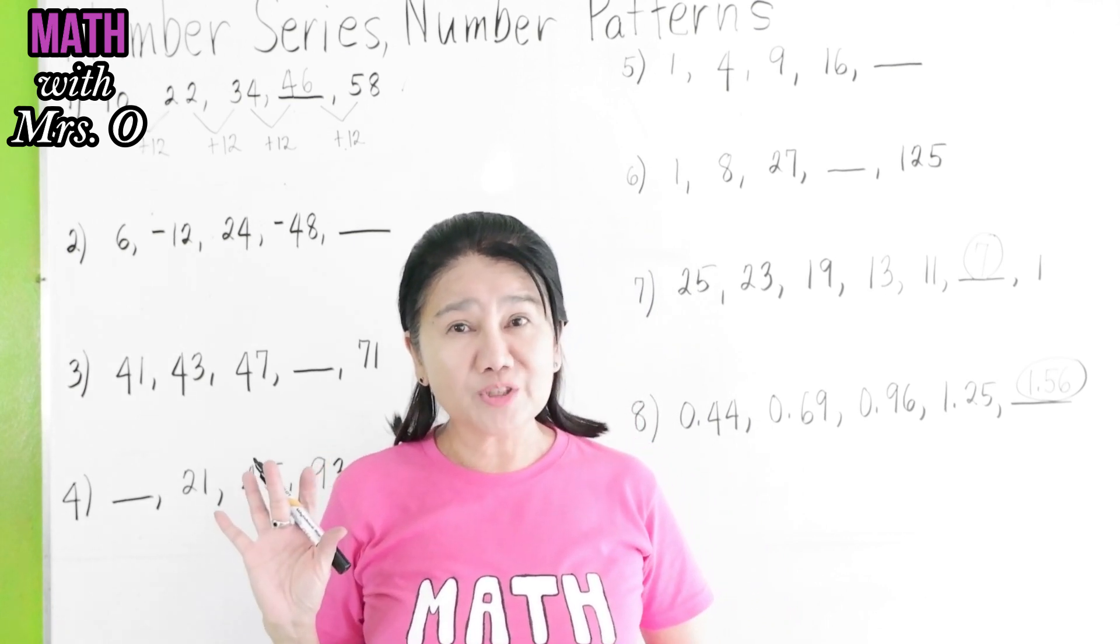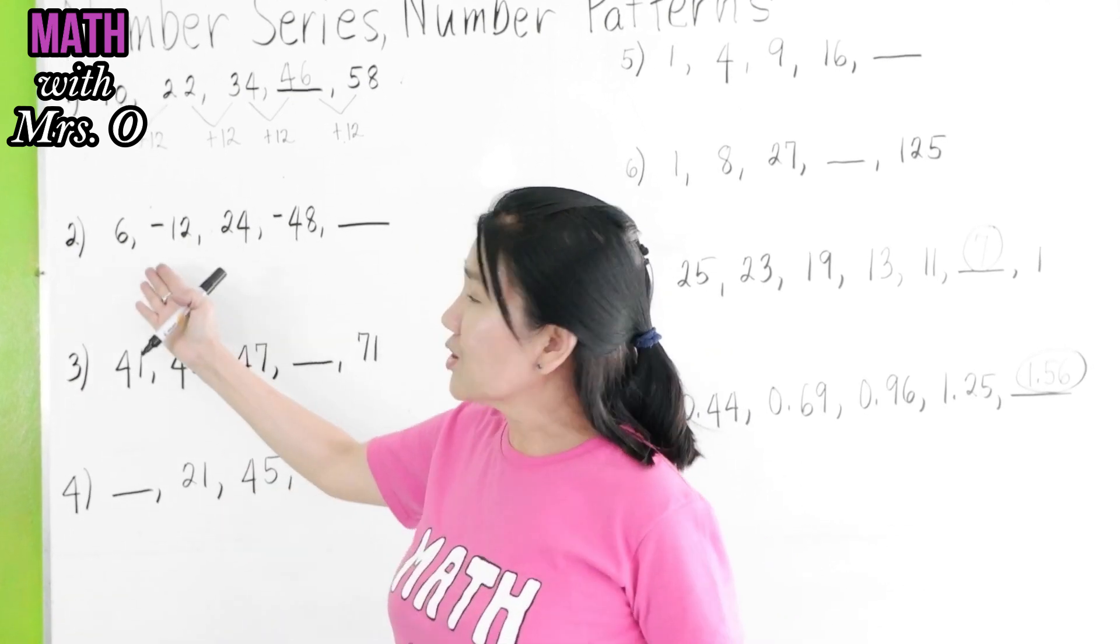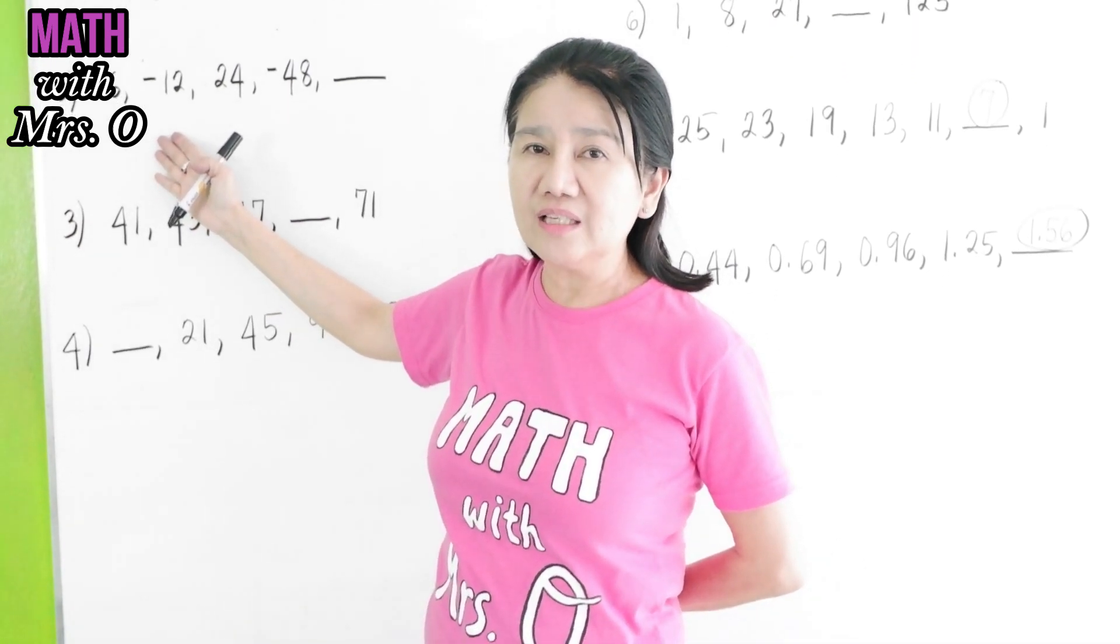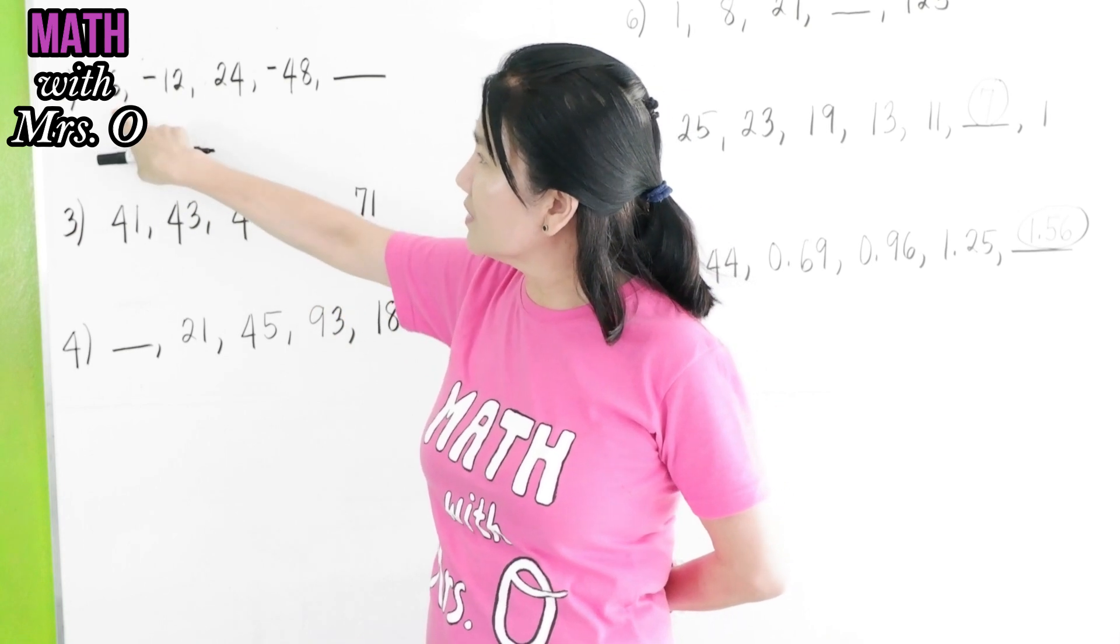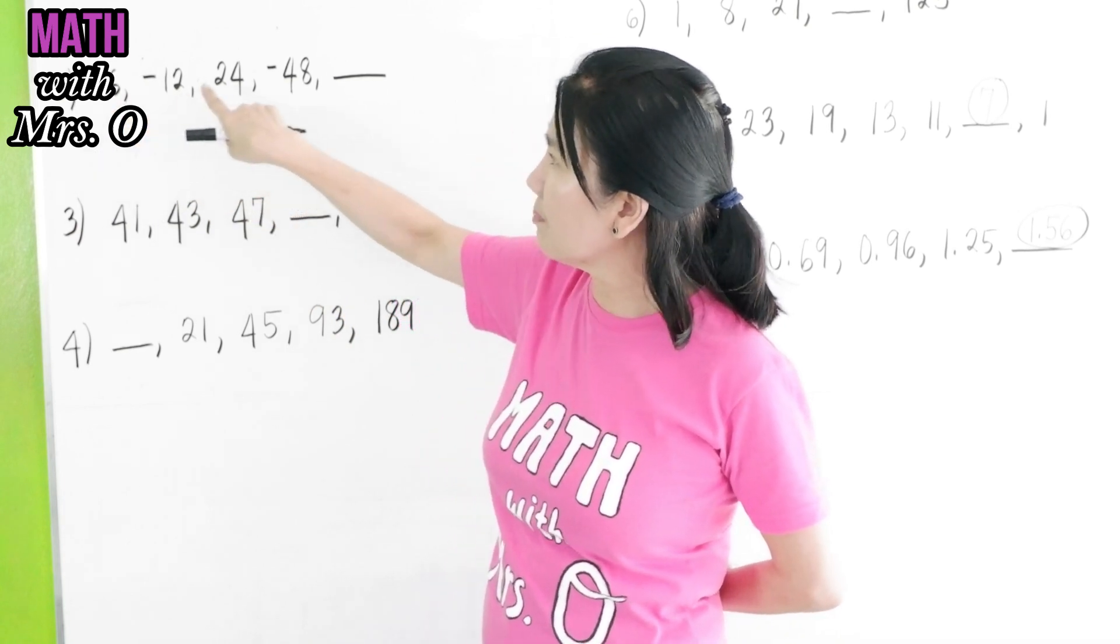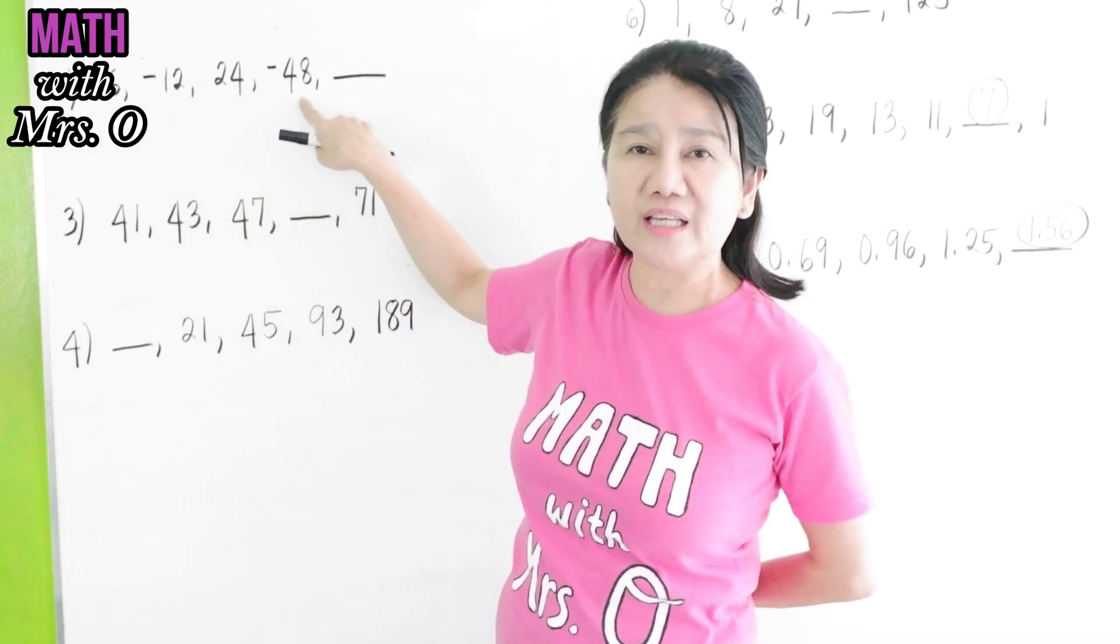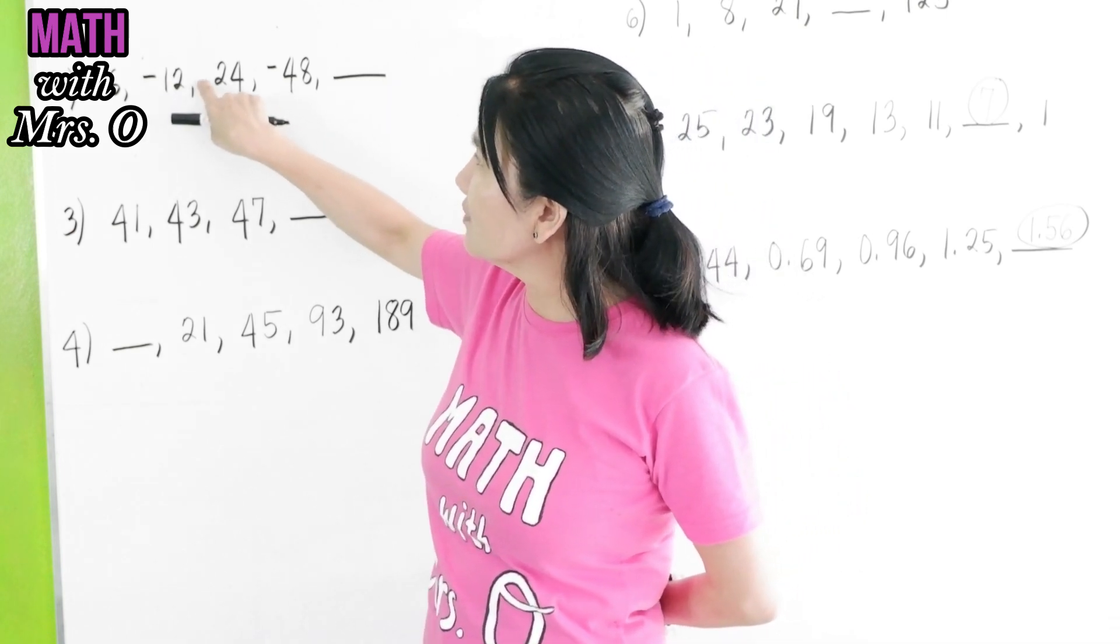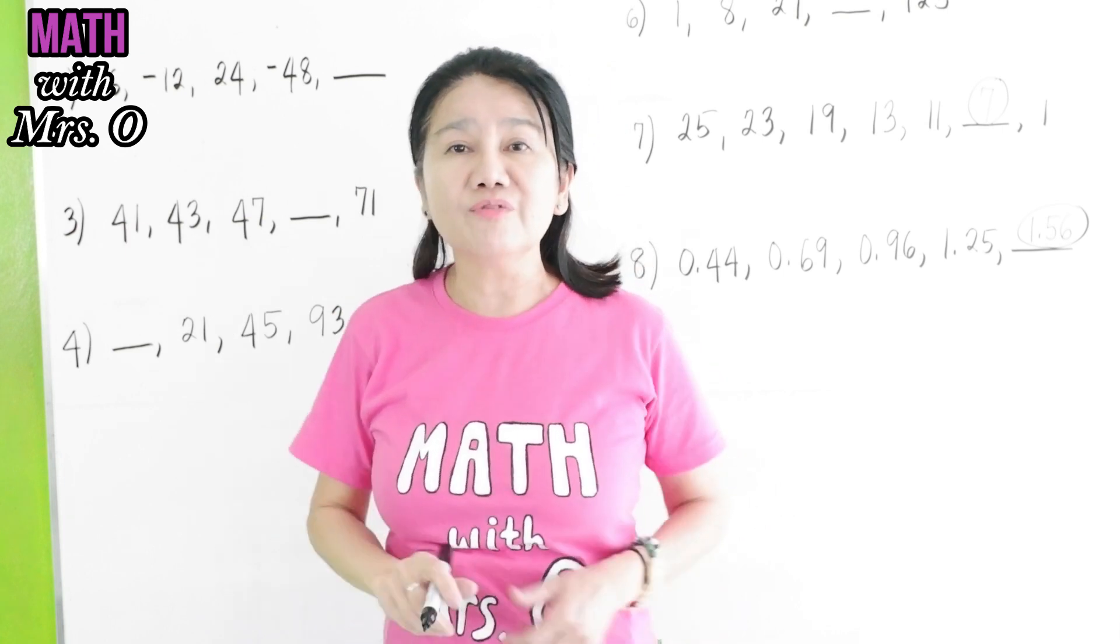Let's move on to problem number 2. As you can see, in number 2, the numbers are alternating in sign. This is positive 6, then you have negative 12, then positive again, then negative 48 and blank. If this is the case, you have to multiply a negative number.